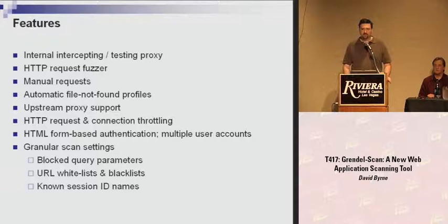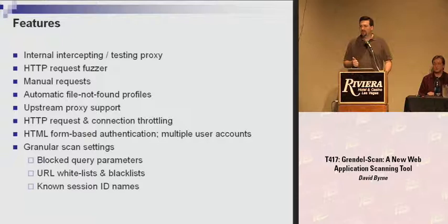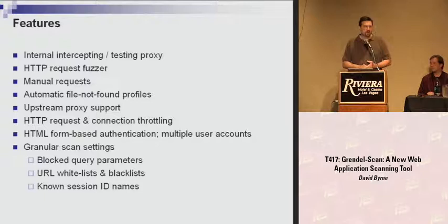In addition to the automated testing modules, there's an internal web proxy that serves two purposes. One is that it allows a user to guide an automated scan — as you browse the website, Grindle discovers new components and starts scanning them for vulnerabilities. The second purpose is to act as an intercepting testing proxy, like WebScarab, Burp, or Paros. Eric will demonstrate those features along with the request fuzzer, manual requests, and the automatic file-not-found profiles.